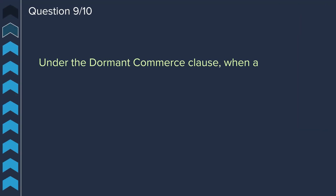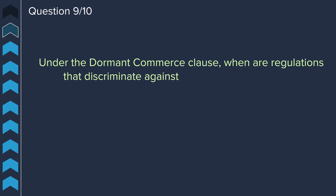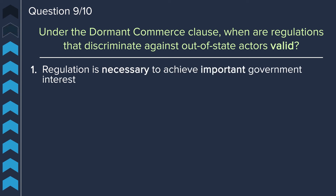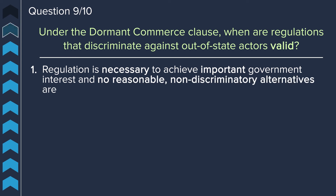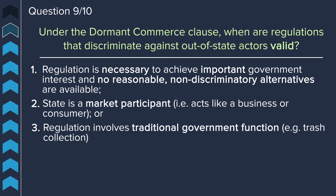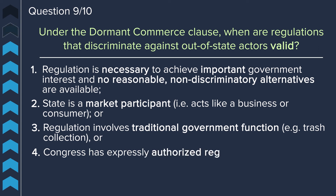Question nine. Under the Dormant Commerce Clause, when are regulations that discriminate against out-of-staters valid? Regulations can be held valid if the regulation is necessary to achieve an important government interest and there's no reasonable non-discriminatory alternative, the state is a market participant, the regulation involves traditional government functions such as trash collection, or if Congress has expressly authorized the regulation.